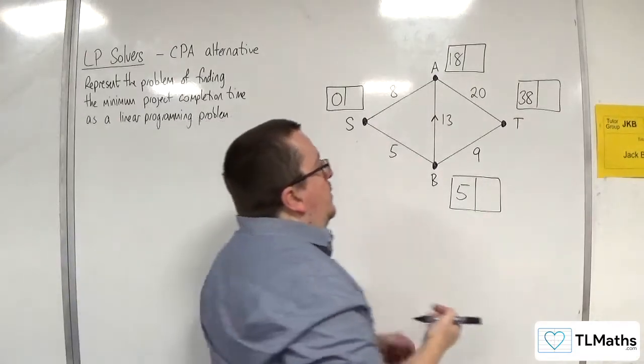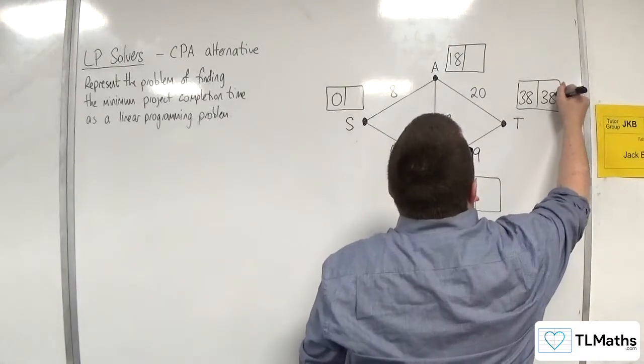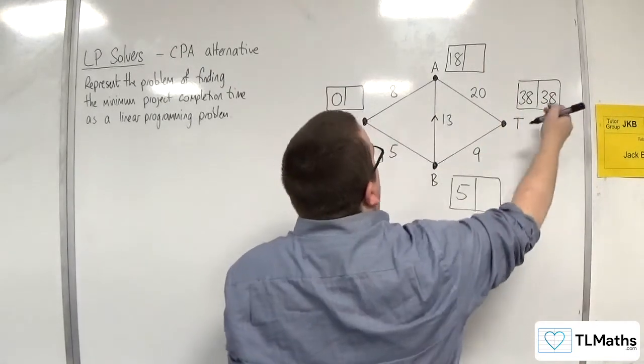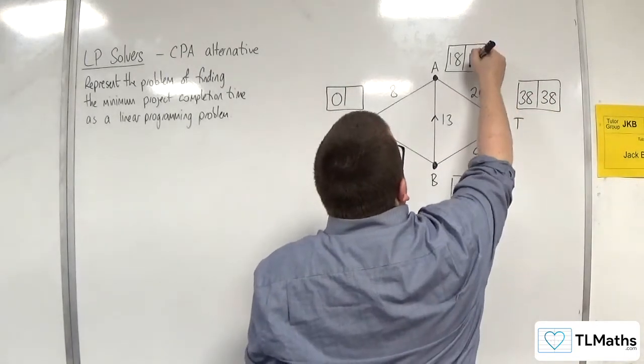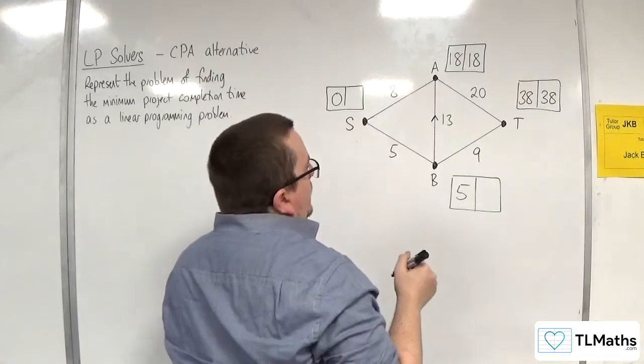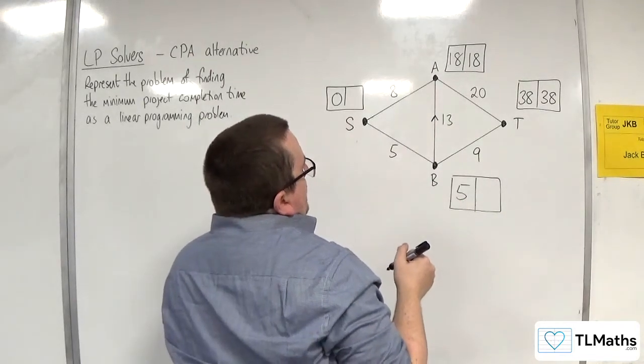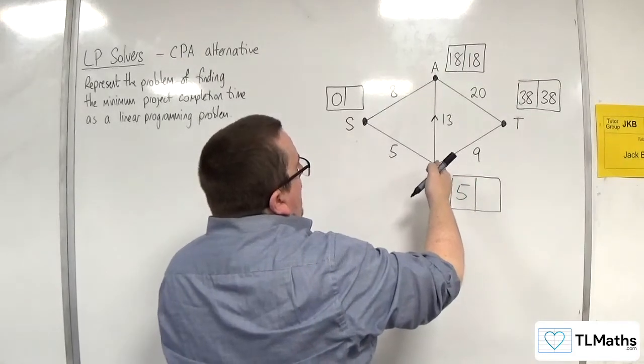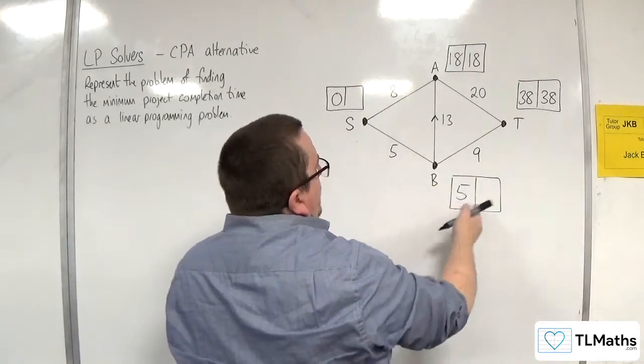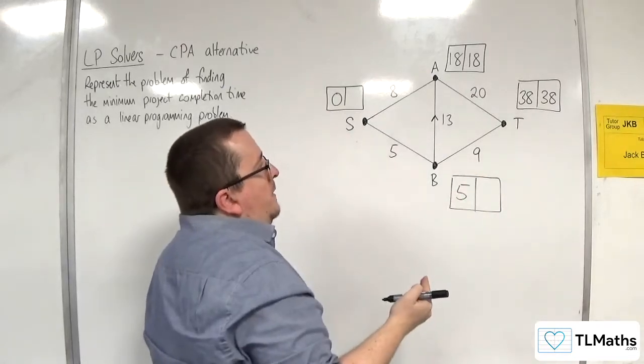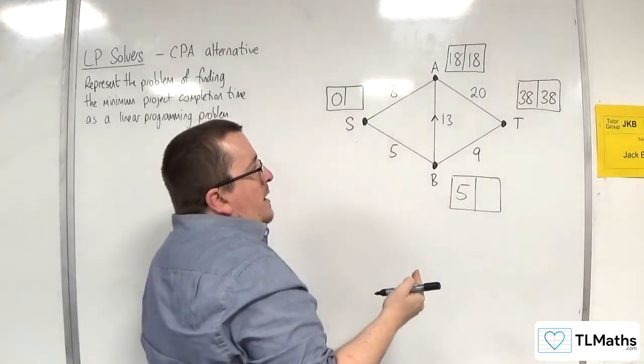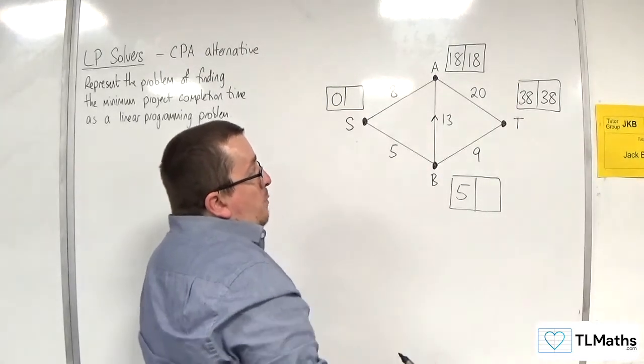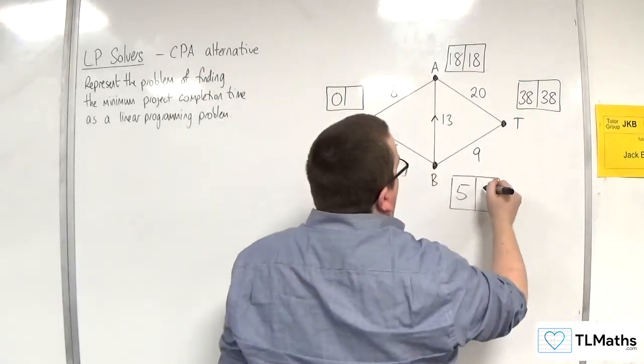And then the backward pass, that's going to have to be 38. So 38 take away 20 will get me the 18. Now, 18 take away 13 will leave me with 5. Or 38 take away 9 will leave me with 29. So I take the smaller of those 2, which is the 5.